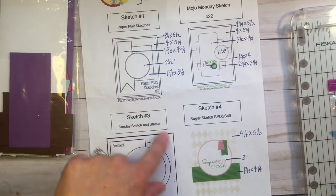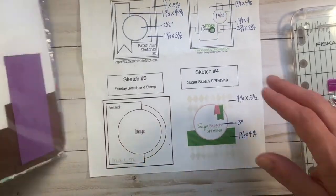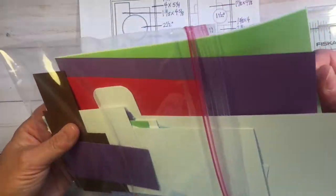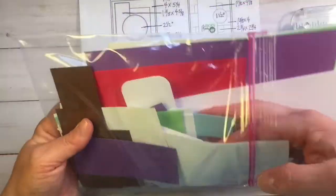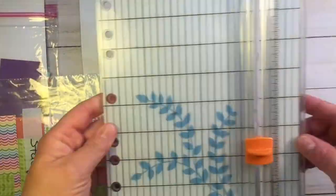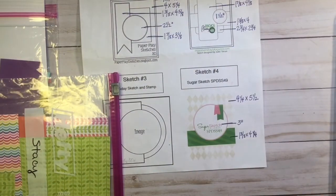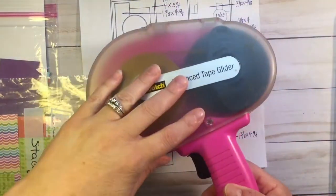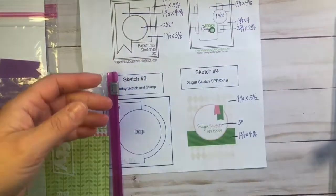I'm going to use sketch number one. I'm going to show you how you can follow the sketch simply, but yet make your card very cute, and then how you could step it up if you wanted to, and only use basic tools such as a trimmer, scissors, a liquid adhesive, and a tape runner.